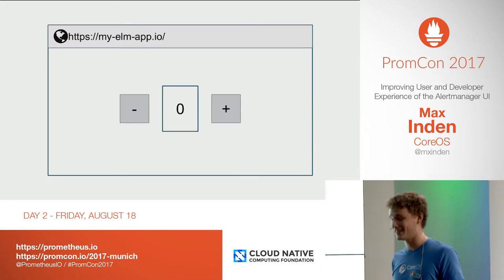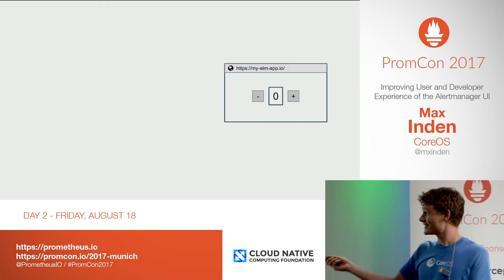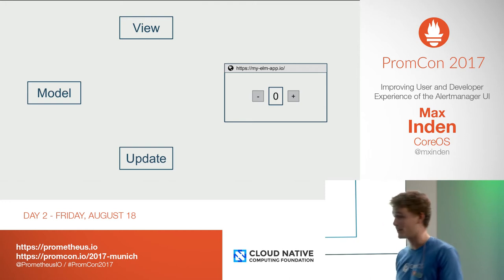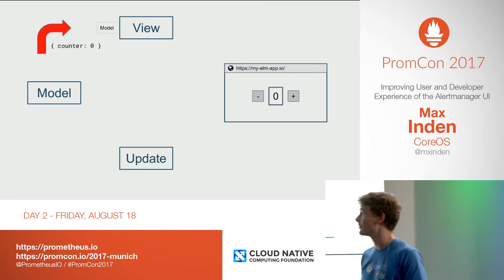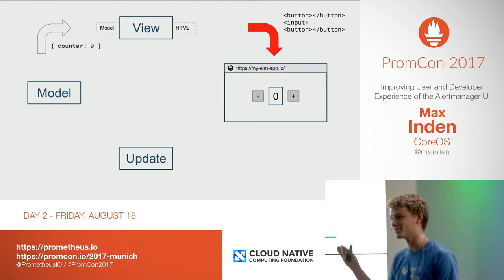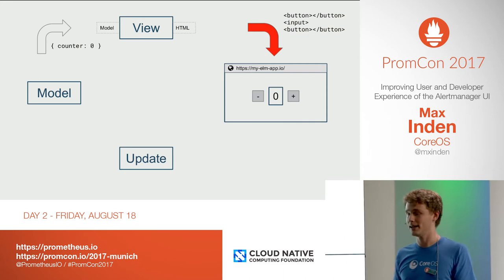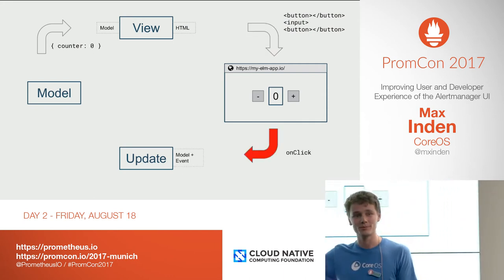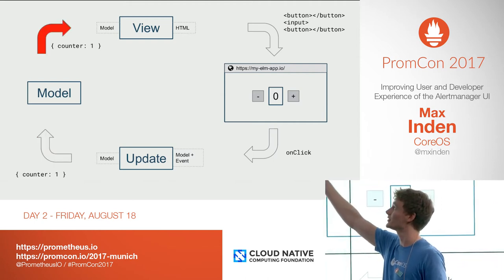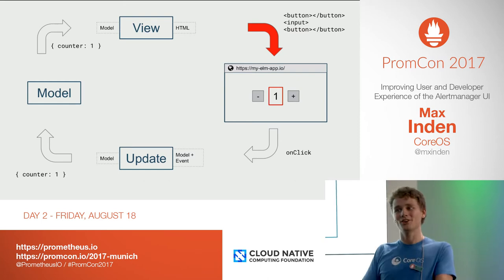Let's look at this from an easier perspective. Let's build a little app with a counter that you can increase and decrease. When we want to build an Elm app, we need three things: an update function, a model, and a view function. Let's start with the model — at the beginning, that model is probably zero. We pass that model into the view function. The view function takes a model and spits out HTML. That HTML is given to the browser and the browser renders it. Whenever the user interacts with that page — for example, clicks somewhere — we pass that event into the update function. The update function takes an event and the old model, and then spits out a new model, and we increase our counter. Really easy.